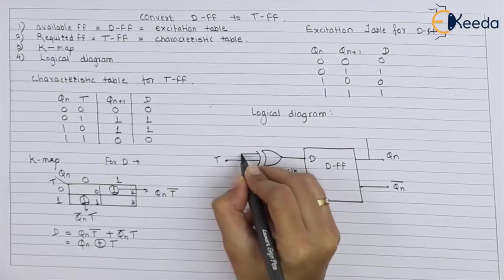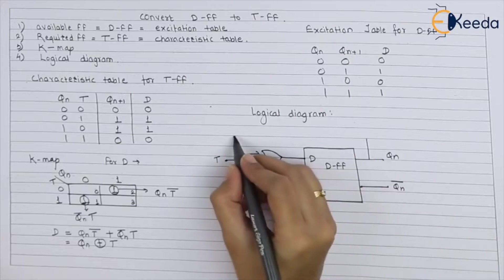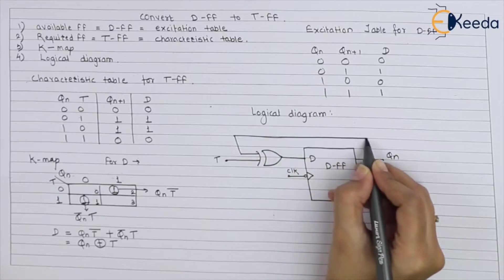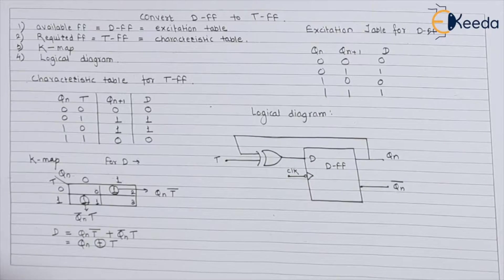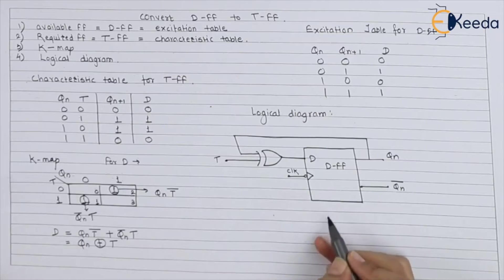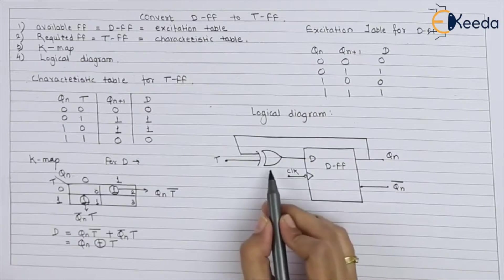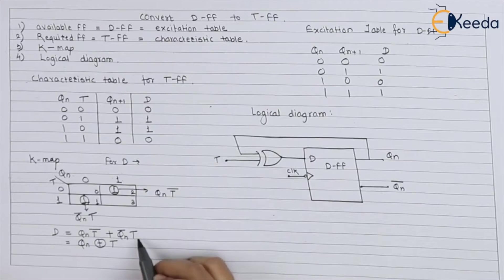You give the second input Qn. In this way, you complete the circuit for conversion of D flip-flop to T flip-flop. This is your final logical diagram. You can use the XOR gate or basic logic gates with this equation. This is the clock signal, and these are the outputs. This is all about the conversion of D flip-flop to T flip-flop.